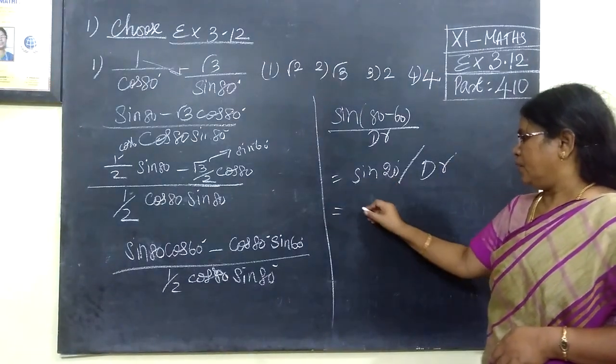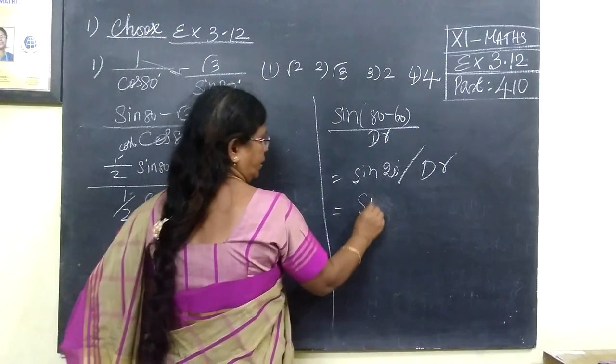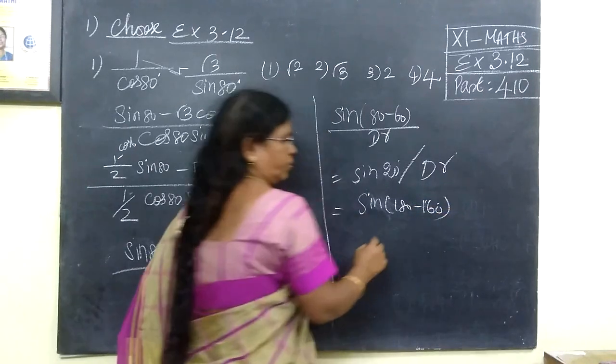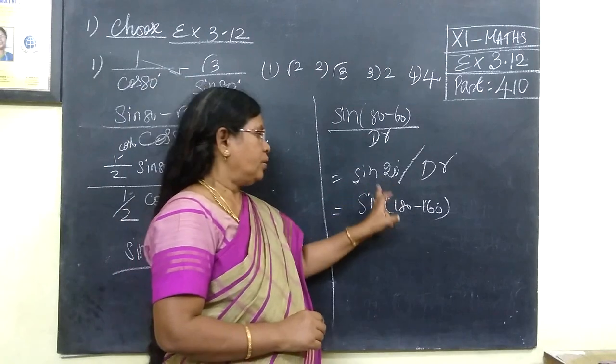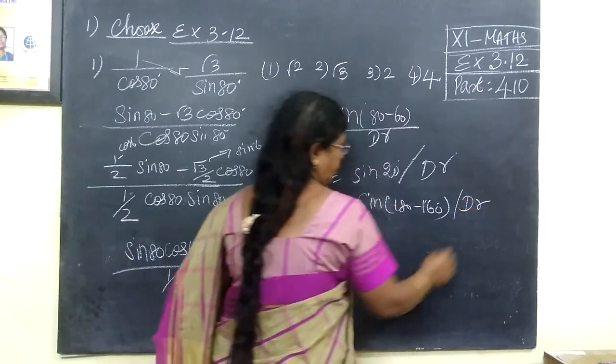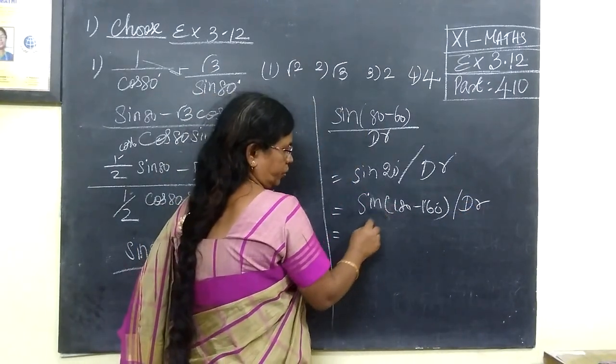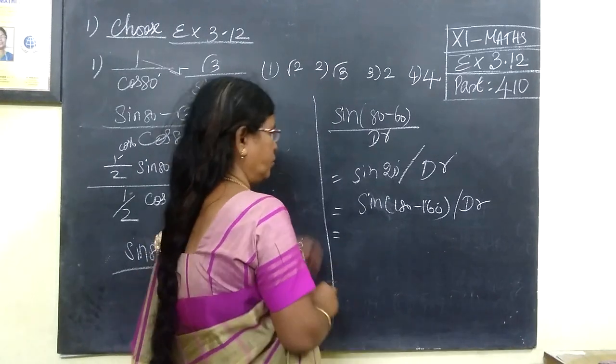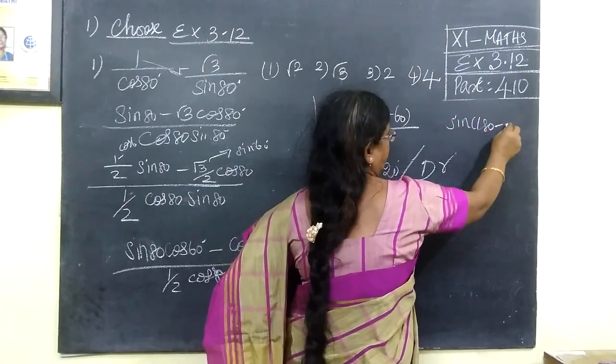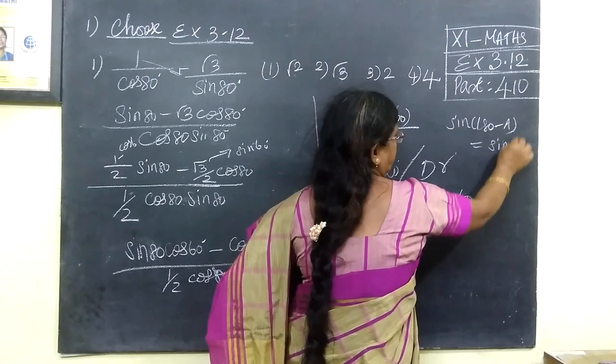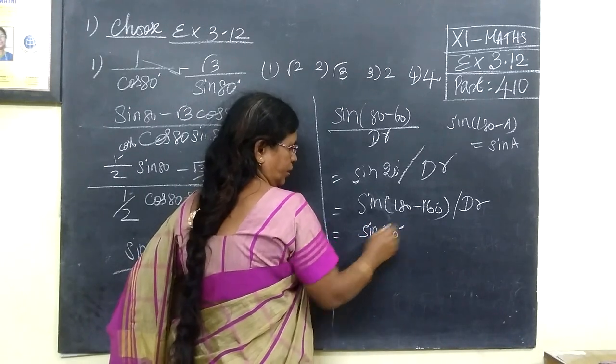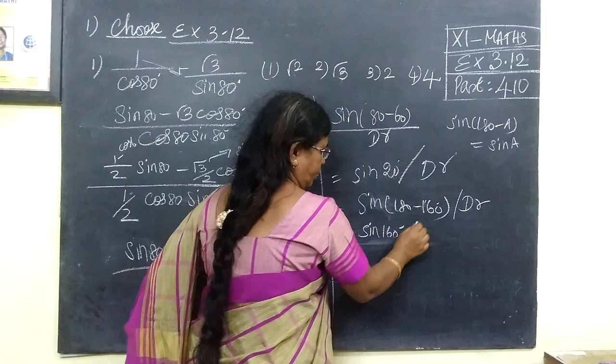After this, sin 20 is sin of 180 minus 160. In the sin formula, sin of 180 minus theta equals sin theta. Then this is sin 160 degrees in the denominator.